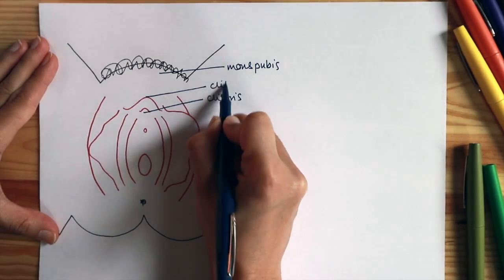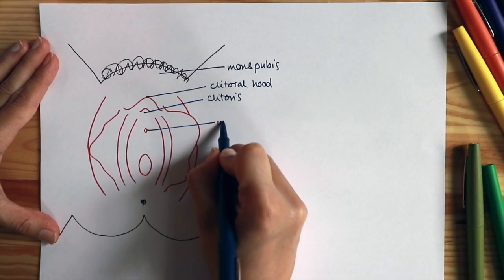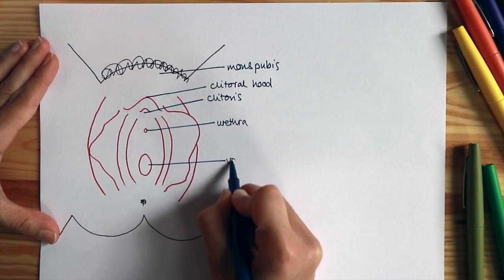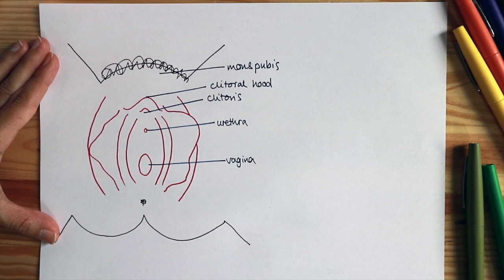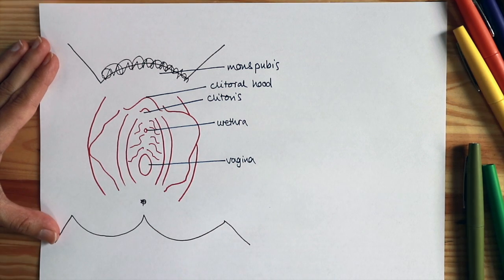Then we have the clitoris and the area above that is a little fold of skin called the clitoral hood. Then we have the urethra where your urine comes out and the vagina. The urethra can be a little bit difficult to make out from the vagina because the area there is quite folded.